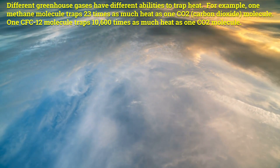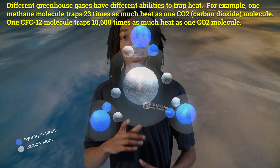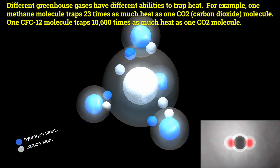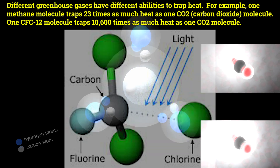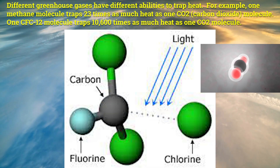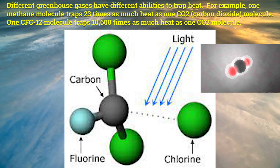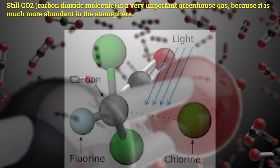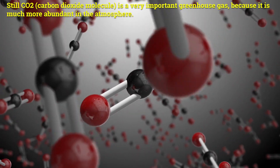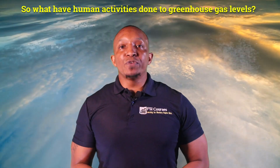Different greenhouse gases have different abilities to trap heat. For example, one methane molecule traps 23 times as much heat as one CO2 molecule. One CFC-12 molecule, a type of CFC, traps 10,600 times as much heat as one CO2 molecule. Still, CO2 is a very important greenhouse gas because it is much more abundant in the atmosphere.